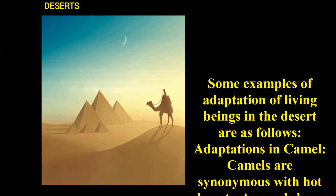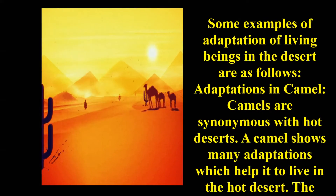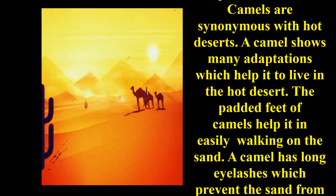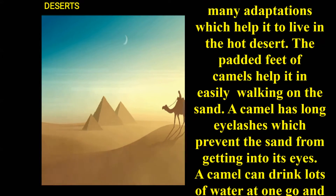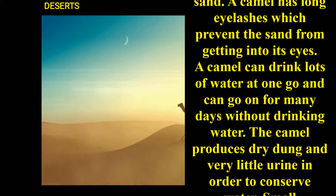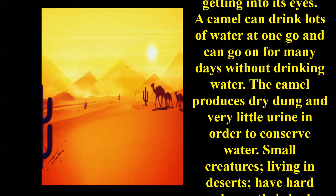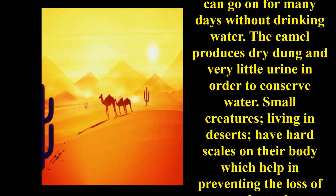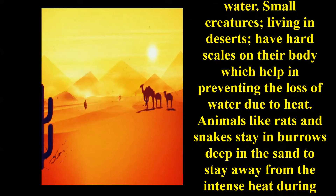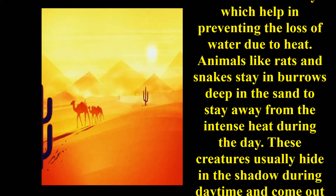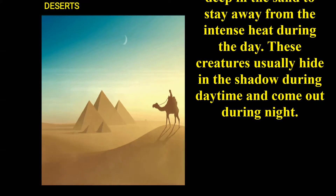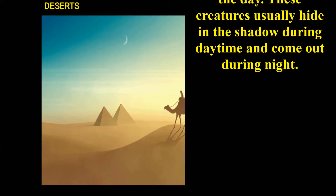Now let us discuss about desert habitats. Camels are synonymous with hot deserts and show many adaptations. The padded feet of a camel help it walk easily on sand. A camel has long eyelashes to prevent sand from getting into its eyes. A camel can drink lots of water at once and go many days without drinking. It produces dry dung and very little urine to conserve water. Small desert creatures have hard skin to prevent water loss, and animals like rats and snakes stay in burrows deep in the sand to avoid intense heat during the daytime.